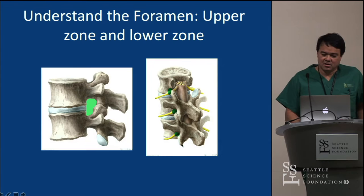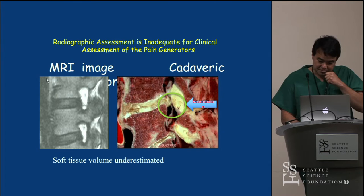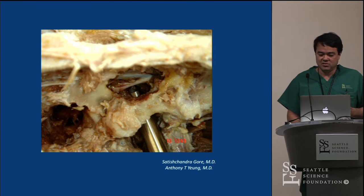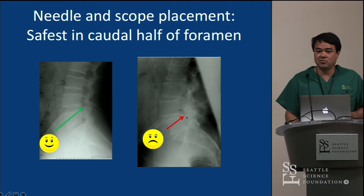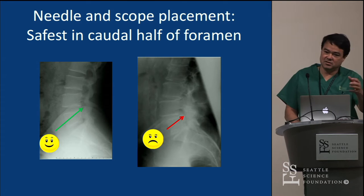Understanding the foramen again: danger up top, safe zone down below. This shows the approach and what you'll see — the exiting nerve root, the traversing nerve root, centrally, and far lateral. Cases you want to start with include a nice alignment of the spine. When you see large facet hypertrophy, it will be difficult to place your scope in the safe zone — you'll have to work from outside, create a new foramen, and then enter the disc space to reach the central canal.